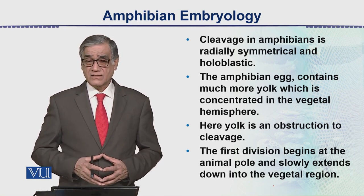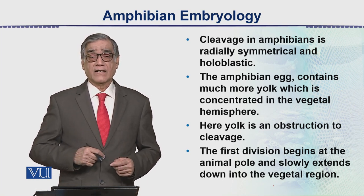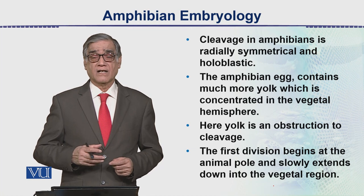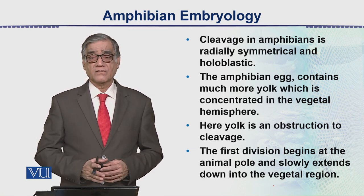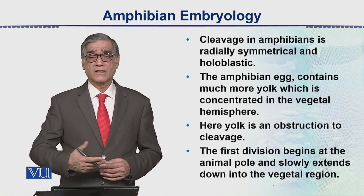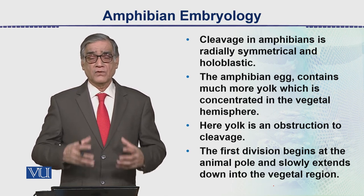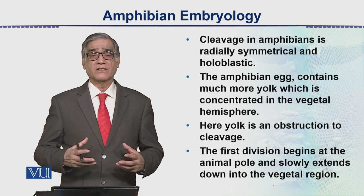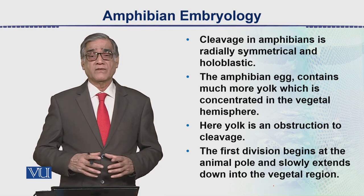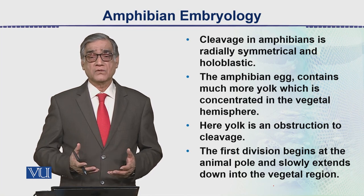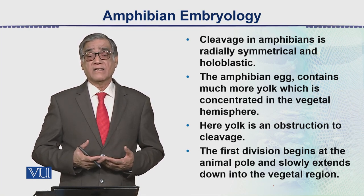The third cleavage occurs at right angles to the first two — similar to how we cut an orange from one side, then the other, then horizontally. This produces four cells which are relatively smaller because the third cleavage is towards the animal pole. This is the eight-cell stage.